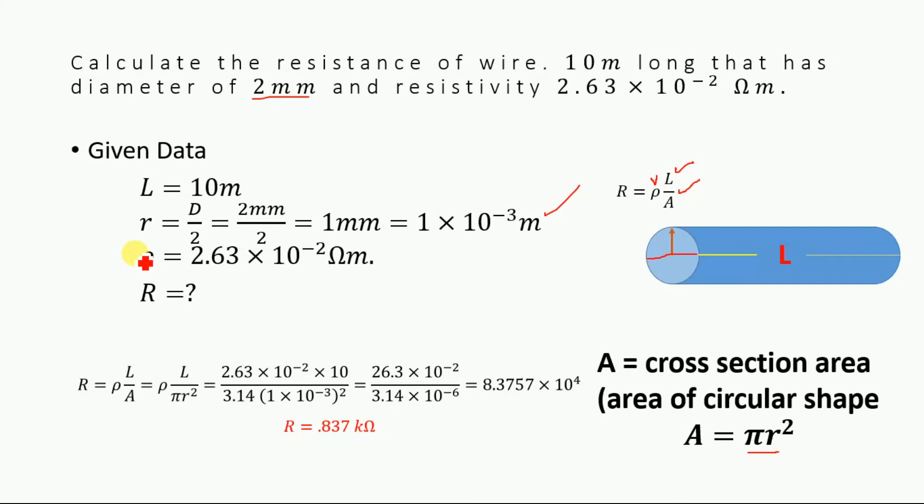Now we are going to substitute the values for resistivity, which is given as 2.63 multiplied by 10 to the power minus 2 ohm meter. The length is given as 10 meters, and we know that area is equal to pi r squared, so we will substitute the value of radius r, which we have calculated from the diameter, which is equal to 1 multiplied by 10 to the power minus 3 meters.